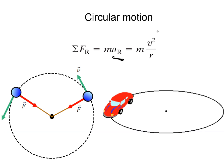The magnitude of the centripetal acceleration turns out to be v squared divided by r, and the direction is always to the center of the circle. So this car is going in a circle, and there is a force directed to the center of the circle. Let's look at a couple of examples.